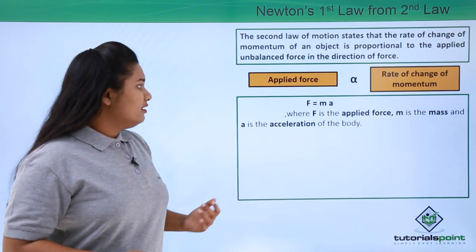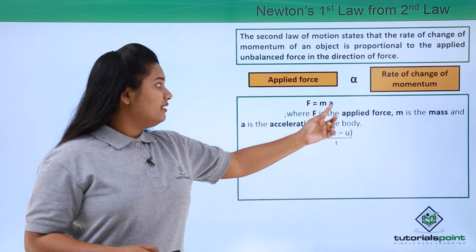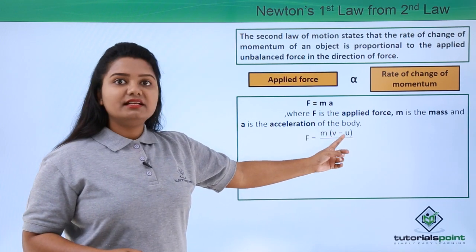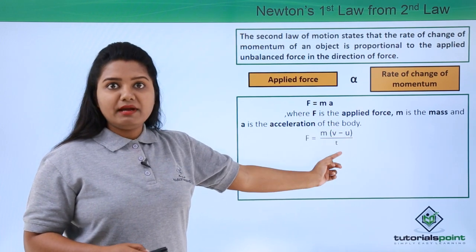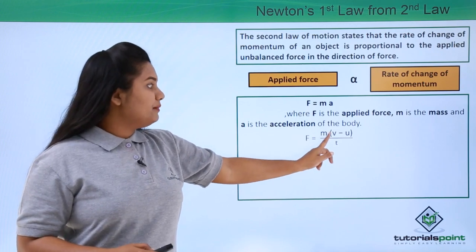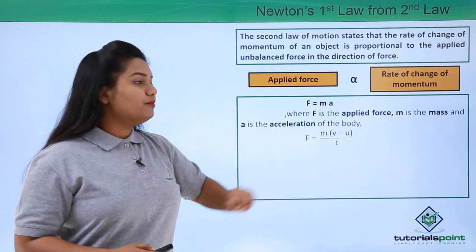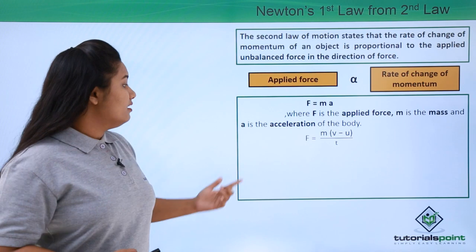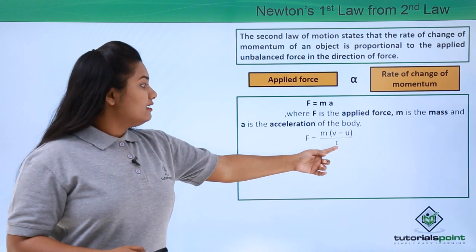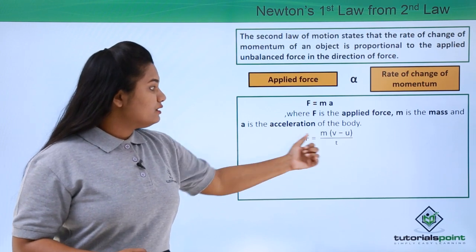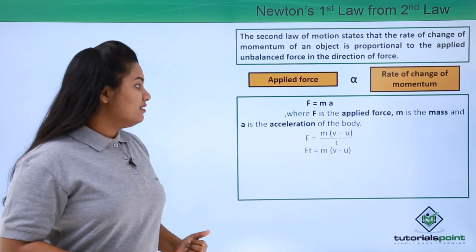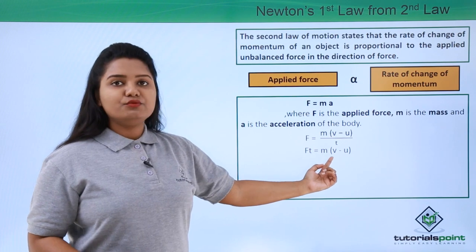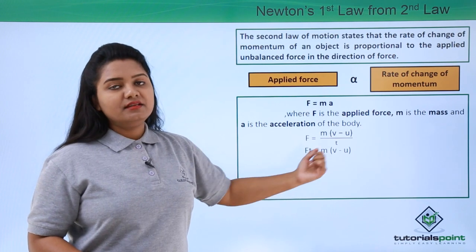Now we have F equals — let us put the formula for a here, that is (v minus u) by t. So F equals m into (v minus u) by t. Taking t to the other side, it becomes F·t equals m into (v minus u).